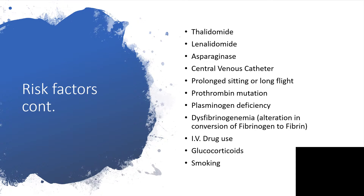Why continue covering risk factors? Because when we know the risk factors, we can work against them — leading to less DVT, less pulmonary embolism, and less sudden death within 72 hours of a pulmonary embolism event. Some medications like thalidomide and asparaginase are risk factors, as is central venous catheterization. Prolonged sitting or long flights — such as crossing the Atlantic from America to Europe — in an individual who is already predisposed can trigger DVT formation and subsequent pulmonary embolism.